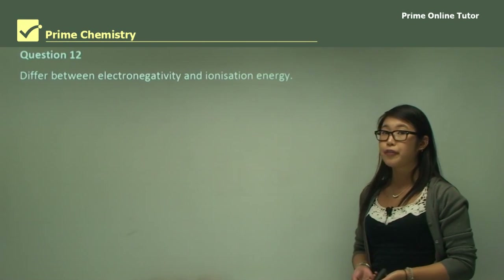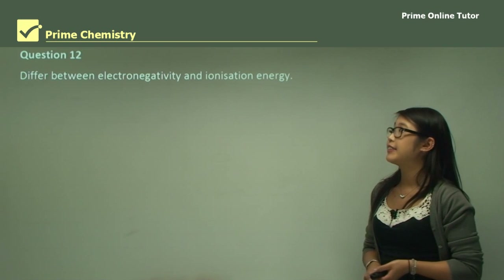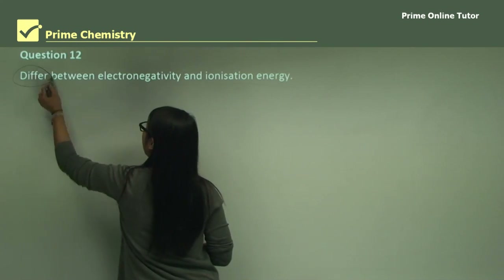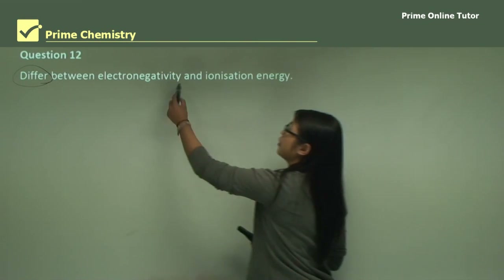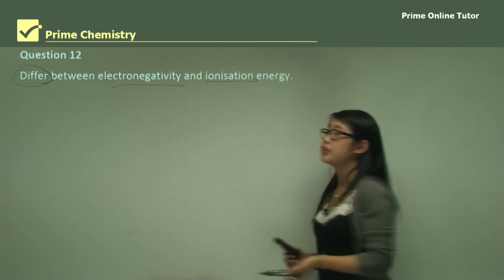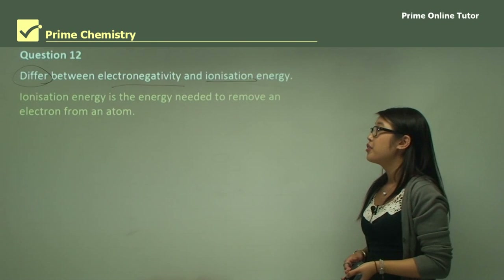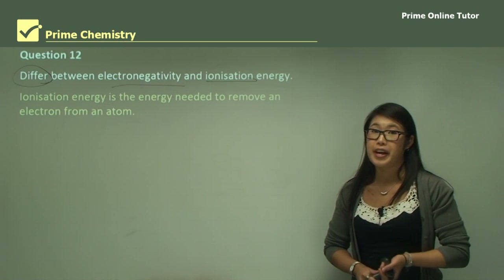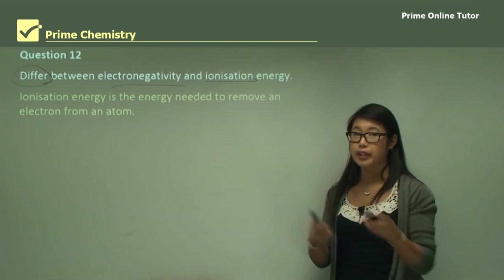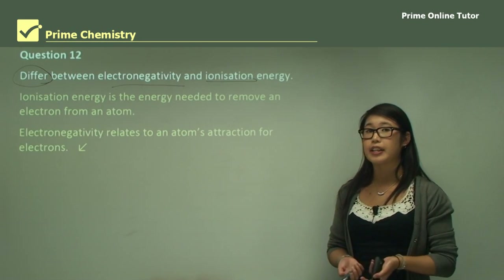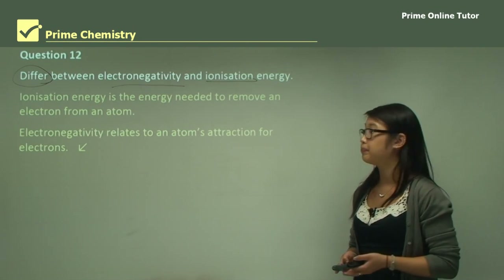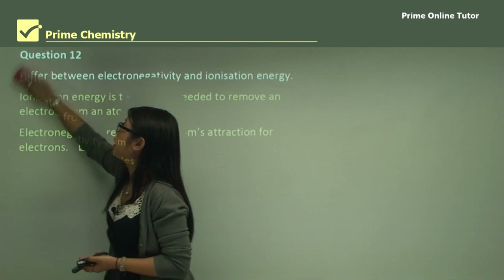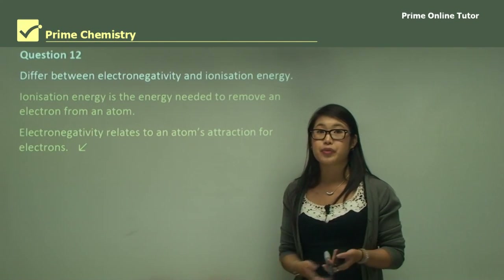Question 12: differentiate between electronegativity and ionization energy. Ionization energy is the energy required to remove an electron from the atom — it's what you need to put in to pull the electron out. Whereas electronegativity relates to an atom's attraction for electrons. The difference is how strong the pull is that the atom has versus what energy is required to remove the electron.